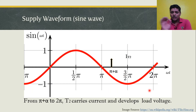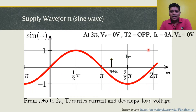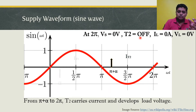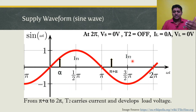Even in the negative half cycle, the current direction through the load is the same as in the positive half cycle, so we again develop positive voltage and positive current. At the instant 2π (the crossover point), the supply voltage becomes zero, reducing the current through T2 below the holding current value, forcing T2 off. Load current and load voltage become zero. So T1 carries current from alpha to π, and T2 carries current from π+alpha to 2π. In both half cycles the same positive voltage is developed across the load.